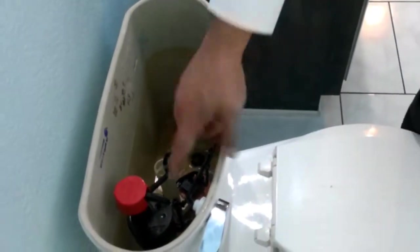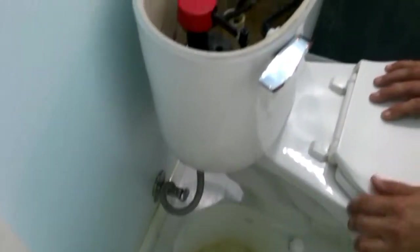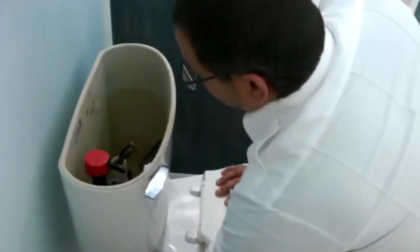This screwdriver port is how you adjust the flow up and down. So what we're going to do now is we're going to add water, see if we got any leaks, and see what level the float stops at.